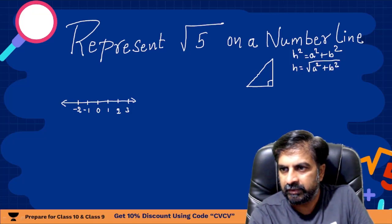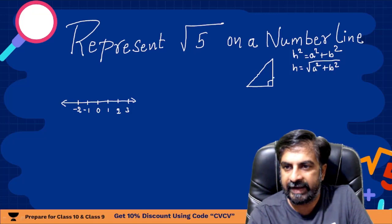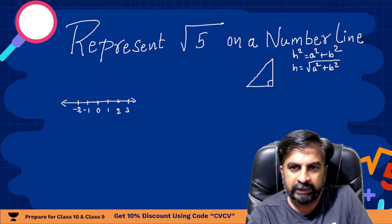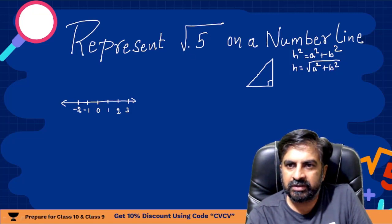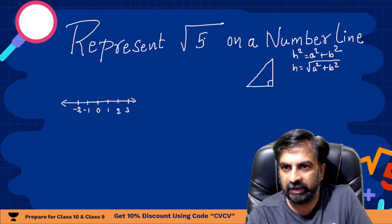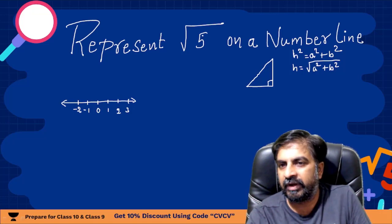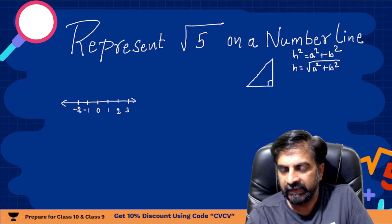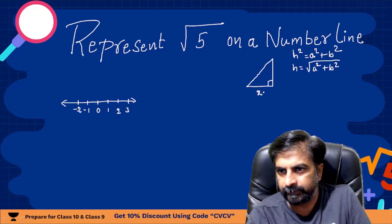This is Pythagoras' theorem. In Pythagoras you are getting h square is equals to a square plus b square, or you can say h is equals to under root a square plus b square. By this you can get this value in the form of root 5. First of all you need to see which is the nearest perfect square number less than 5.